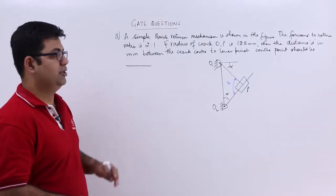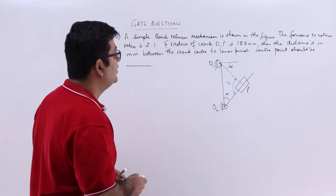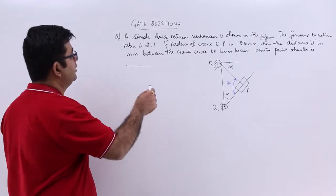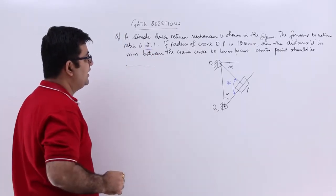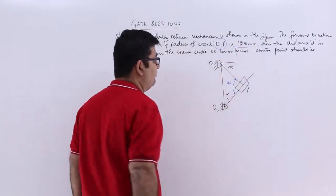Now let's look at question 4. Question number 4 is showing a quick return mechanism. The forward to return ratio is 2 is to 1. If the crank radius O1P is 125 millimeters, then the distance d in millimeters between the crank center to lever pivot center point.